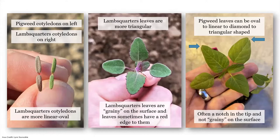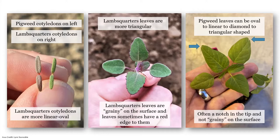Common lambsquarters is often confused with pigweeds at the seedling stage because of similar leaf shape, but there are differences. The lambsquarters cotyledon tends to be more linear-oval — think a rectangle with rounded edges — where the pigweed cotyledon tends to be more spear-shaped. Also, lambsquarters leaves are more triangular and have a graininess on the surface due to glandular trichomes, or little leaf hairs, sometimes with a red edge. Pigweed leaves are oval to diamond-shaped and smooth, not grainy.